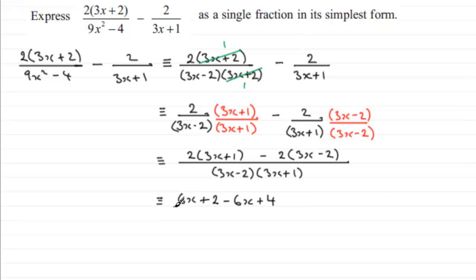And that's all over that denominator there of 3x minus 2 multiplied by 3x plus 1. The top simplifies because we've got 6x take 6x which is 0, plus 2 add 4 which is 6, so you end up with 6 over 3x minus 2 multiplied by 3x plus 1. And there you go, simplified.